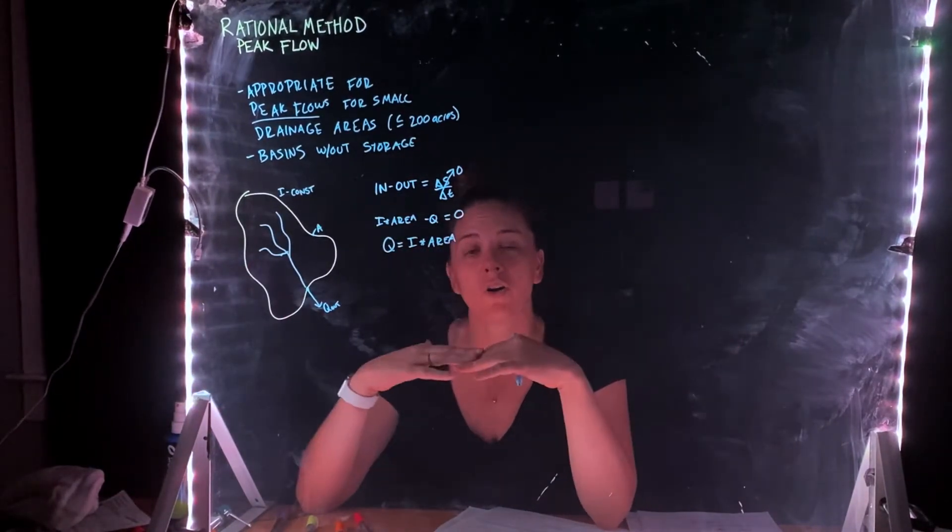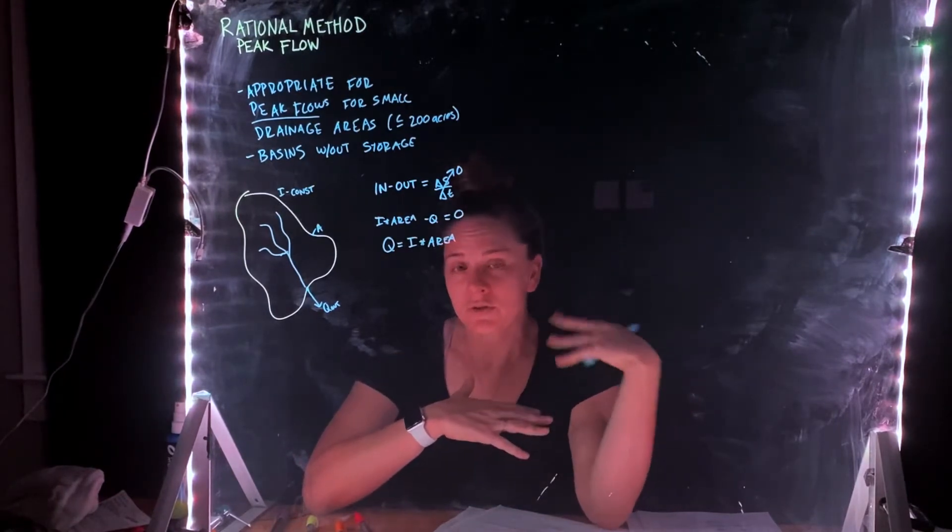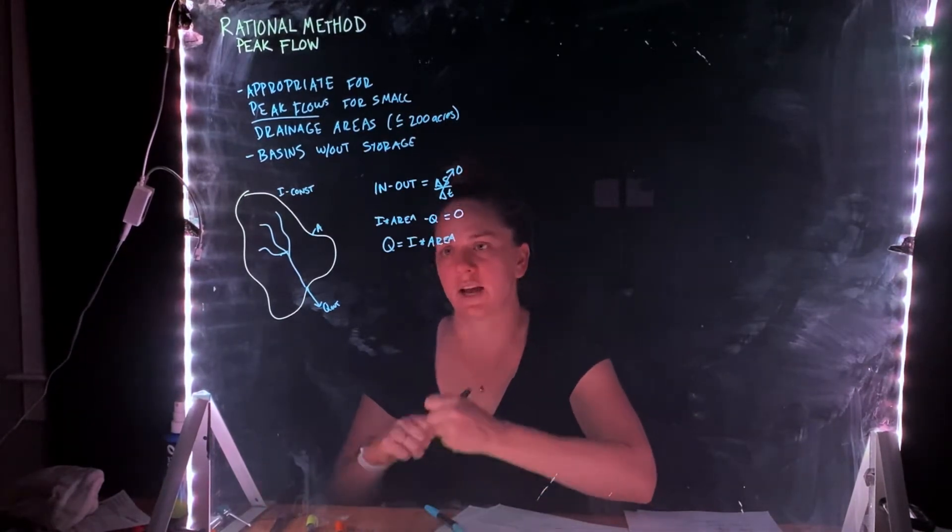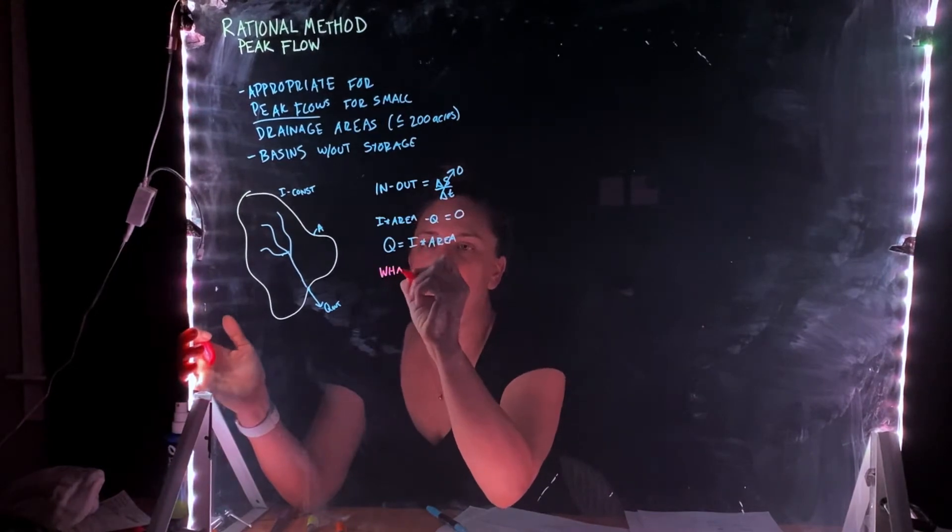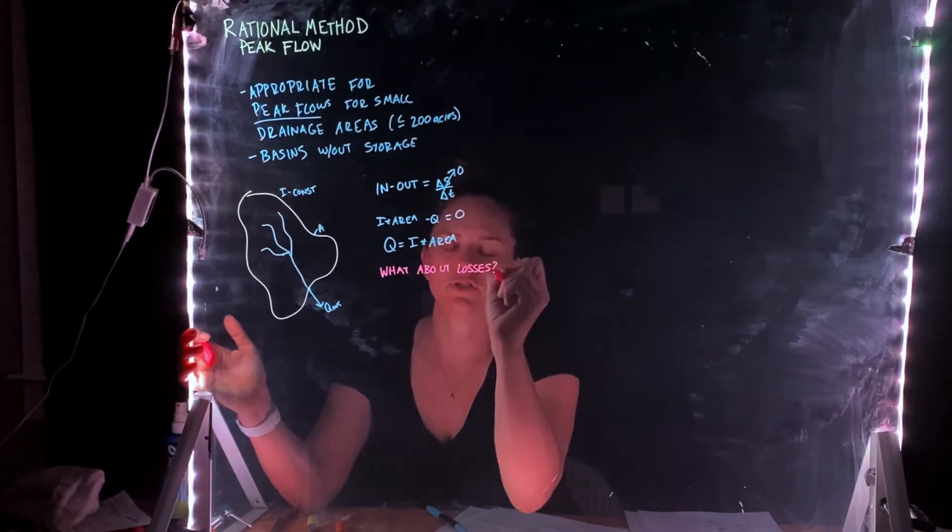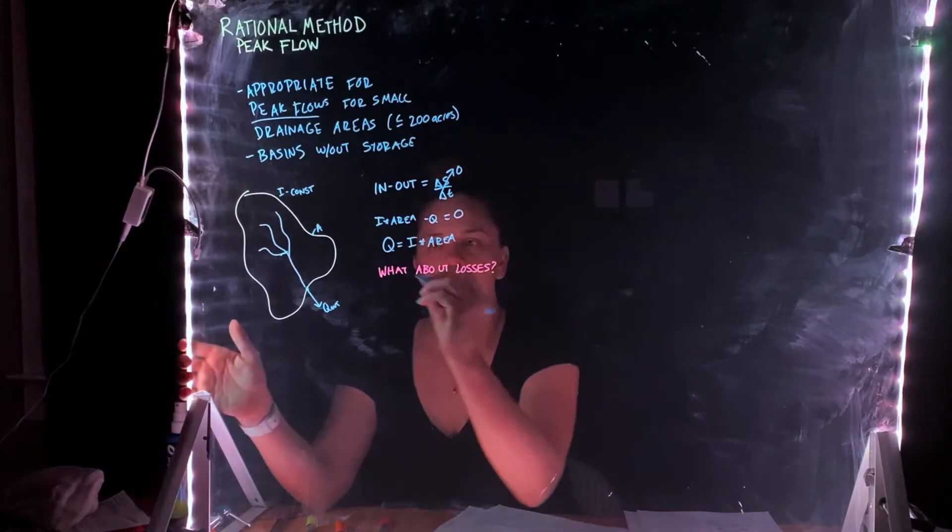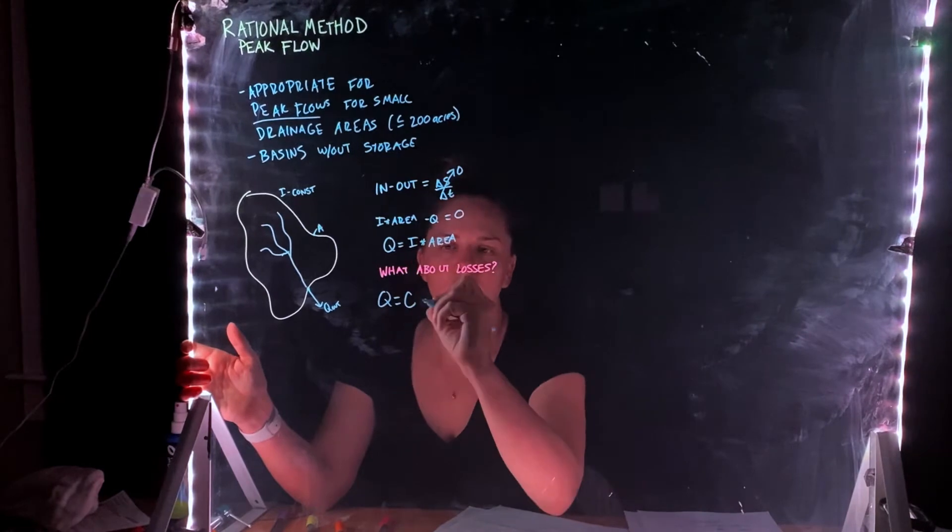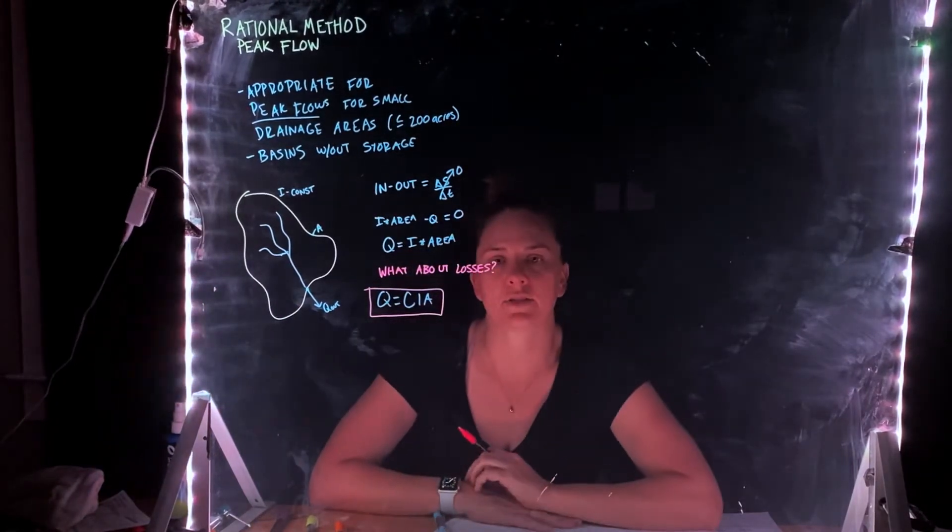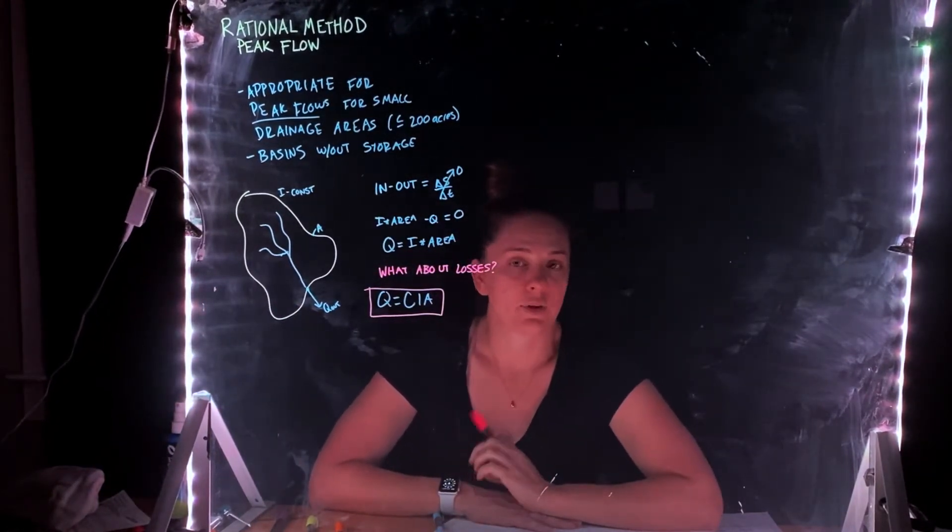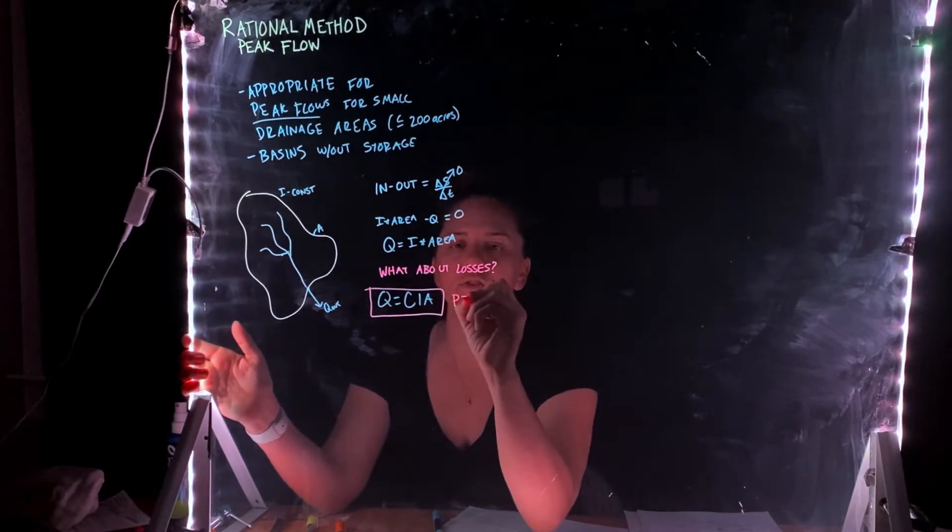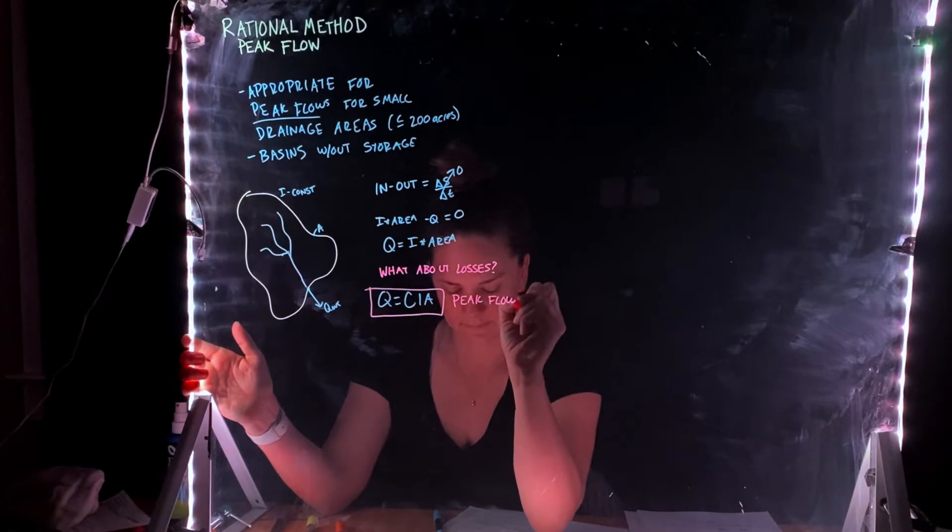That would be a perfect world if all that fell as rain made it to the outflow. But we know enough already by this point in our studies of water resources that this is not true and that we need to account for some losses. So what about our losses? We are going to account for our losses by introducing a coefficient which we'll call C. And so our equation for the rational method becomes Q is equal to C I A. So this is our rational method equation.